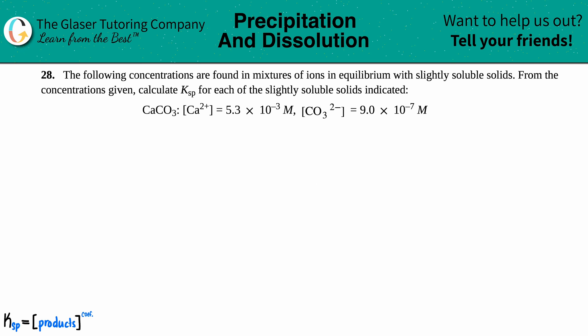Number 28. The following concentrations are found in mixtures of ions in equilibrium with slightly soluble solids. From the concentrations given, calculate the Ksp for each of the slightly soluble solids indicated. We have calcium carbonate.